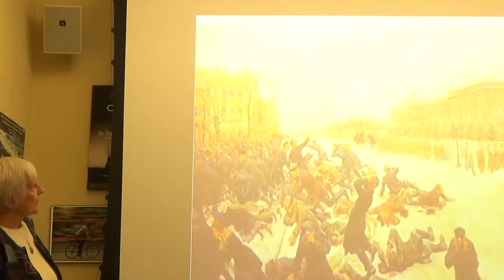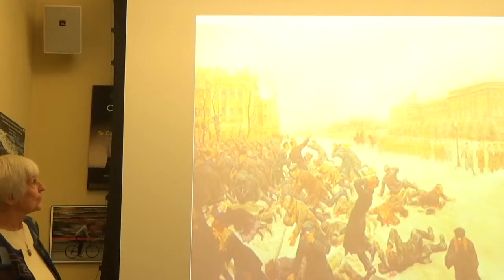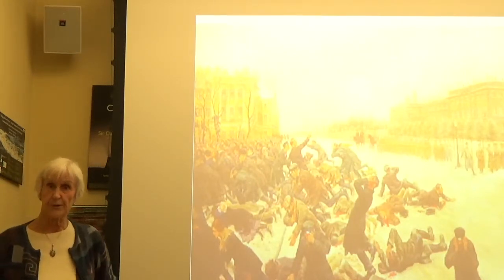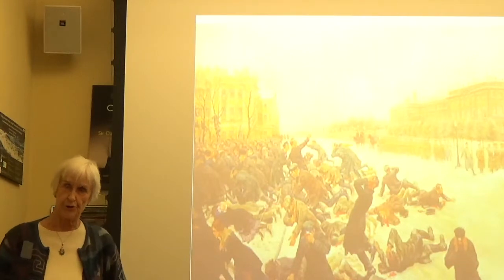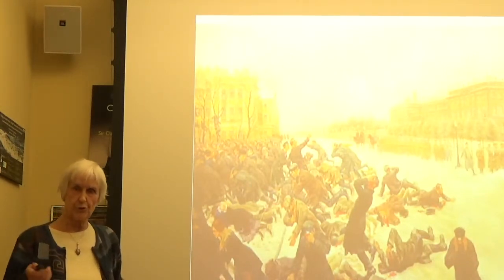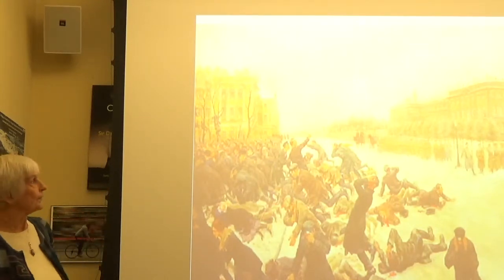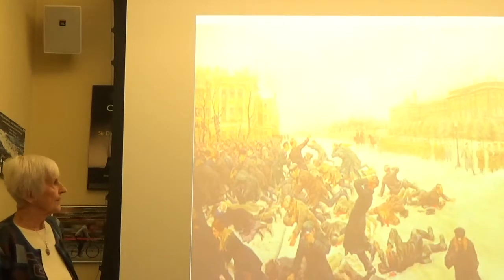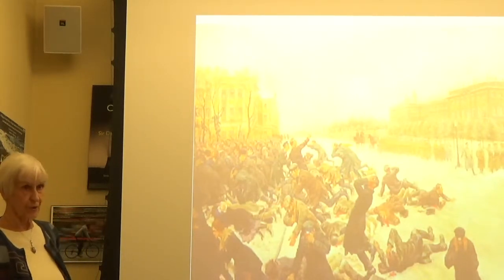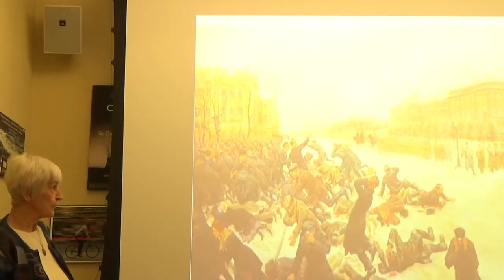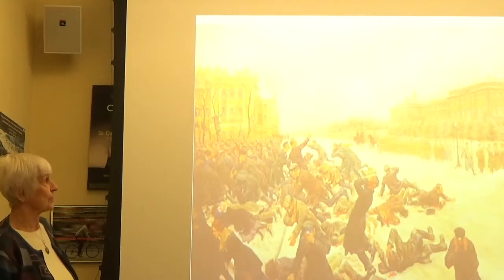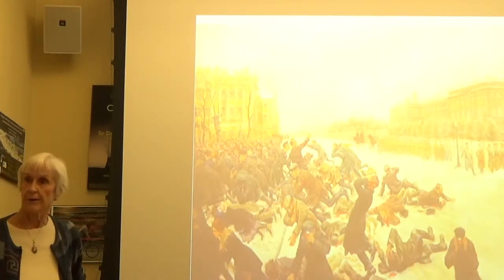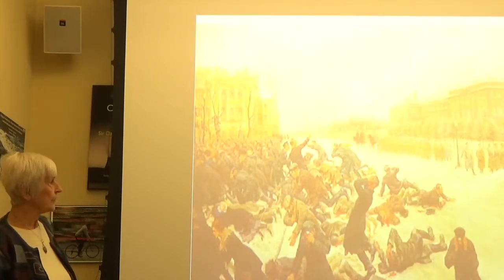But of course also in that time terrible things started happening in Petersburg. The so called Bloody Sunday of 1905 was really the beginning of the big troubles that led eventually to the Russian revolutions in 1917. And this is a painting from the Bloody Sunday which I remember my grandmother actually talking about indignantly, how people had come to Saint Petersburg to demonstrate to the Tsar because they were hungry basically. And the Tsarist troops had fired on these unarmed people and many including women and children were killed.